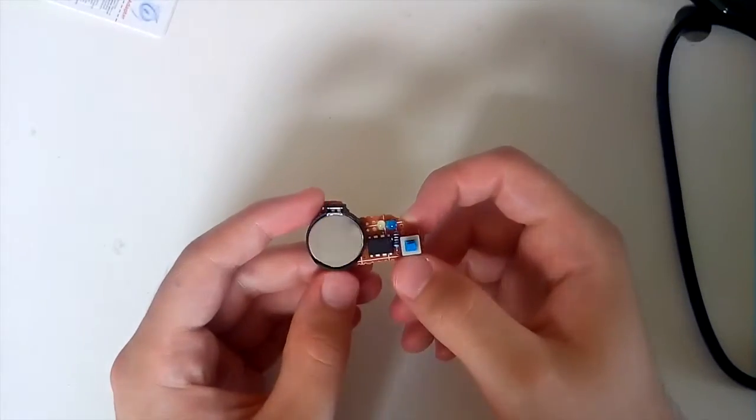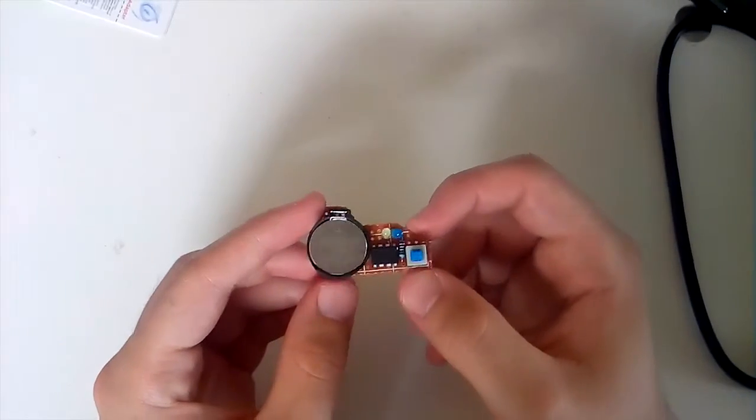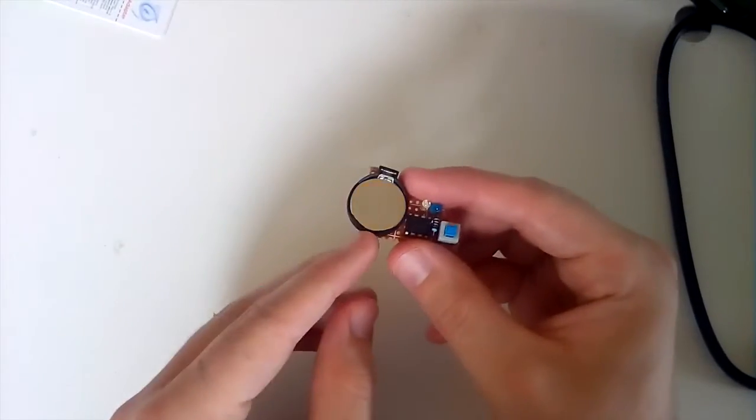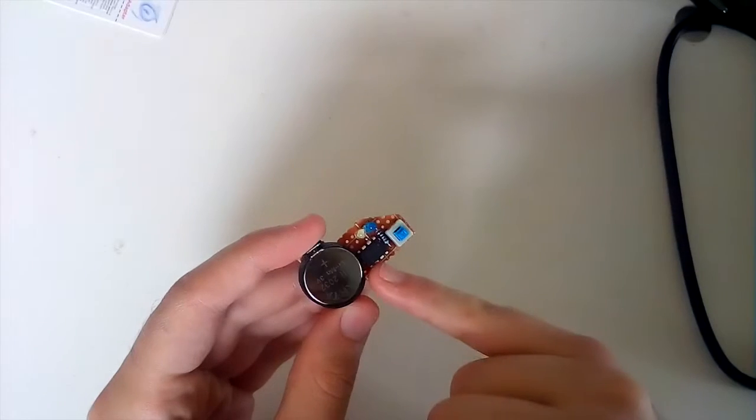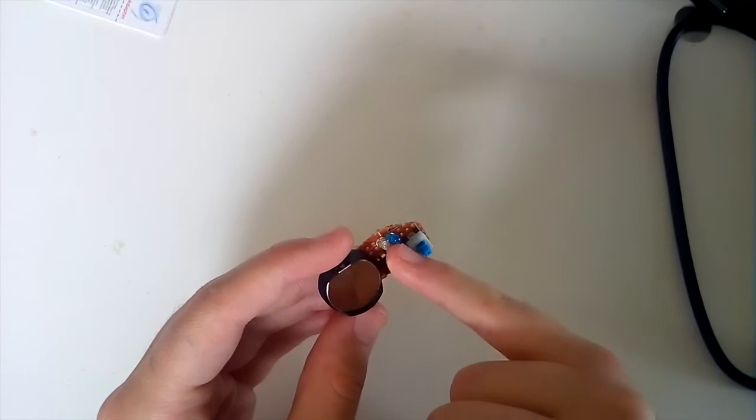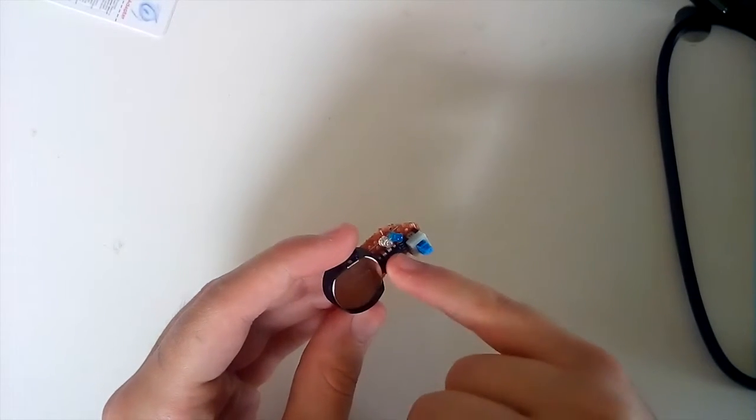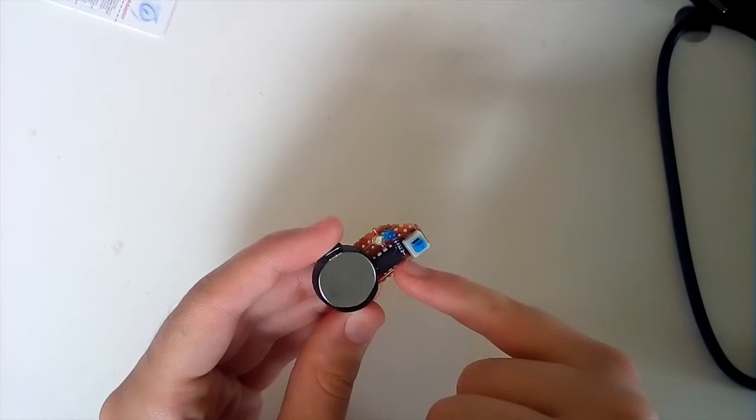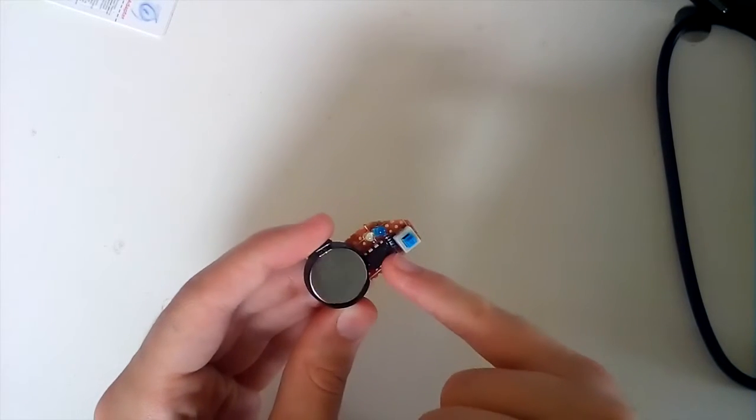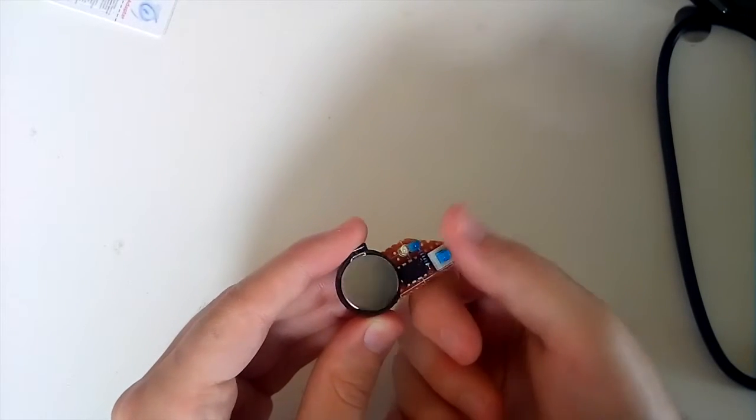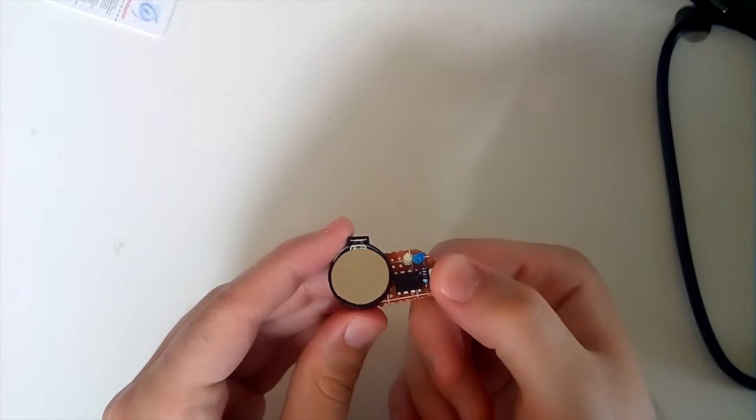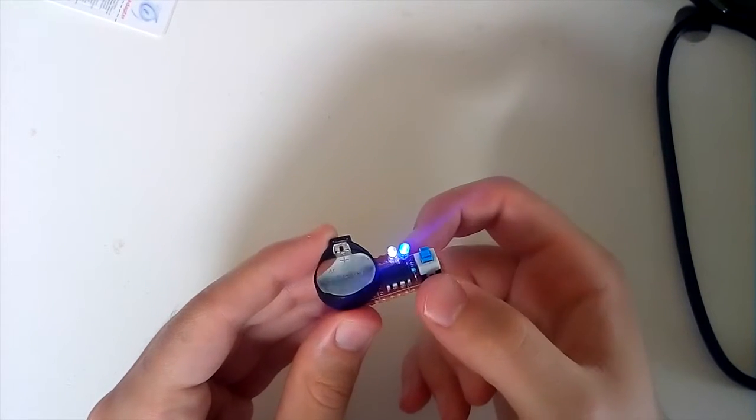This is what I came up with in the end. It's a really small circuit, just a CR2032 battery, the ATtiny, two LEDs connected to these ports just here, and a resistor which connects the other end of the LEDs to ground.